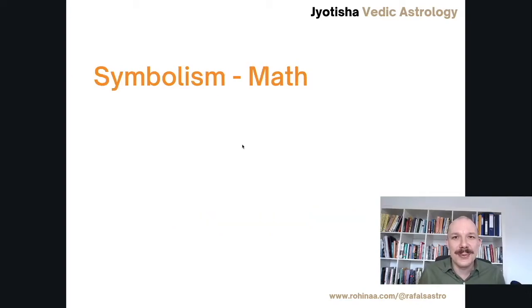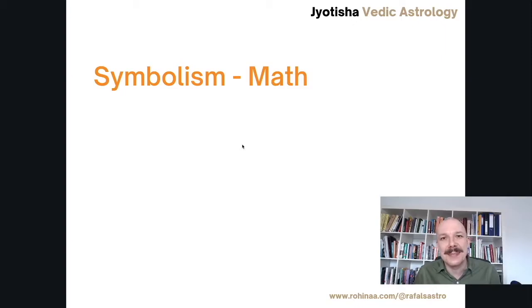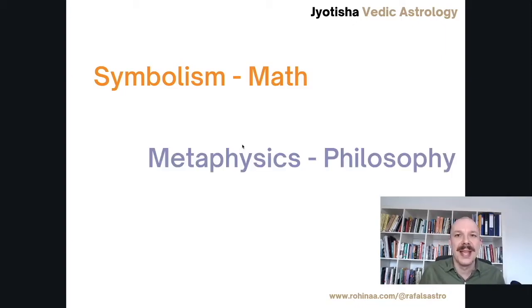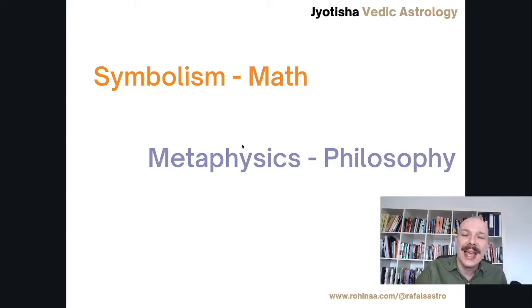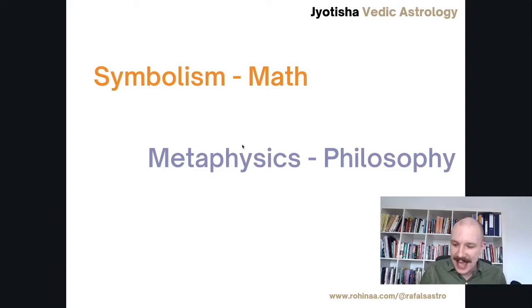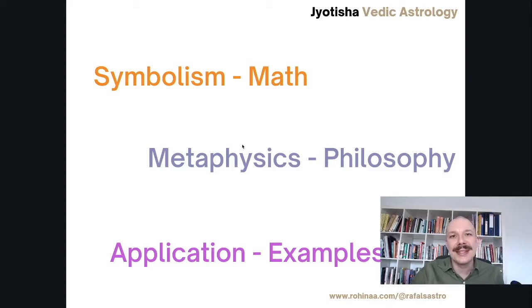In the interpretation of astrological rules, we need to understand there are three steps. The first is calculation — we need to understand how something is calculated, like how Rasi Drishti is calculated. The second step is metaphysics — we know where the symbols are in the horoscope and derive their abstract meaning. The third step is application — we learn through examples how this abstract meaning manifests in our life, which comes with research and practice.